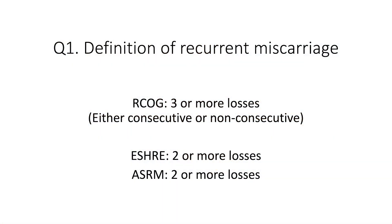Recurrent miscarriage is defined as three or more first trimester miscarriages. Two important points to note here. First, the three or more miscarriages do not need to be consecutive. So if a woman has had a miscarriage, then a live birth, and after that two more miscarriages, it would still be classified as recurrent miscarriage, as she's had three miscarriages in total. The European ESHRE guideline and the American ASRM guideline define recurrent miscarriage as two or more previous pregnancy losses, so the RCOG definition is somewhat stricter.